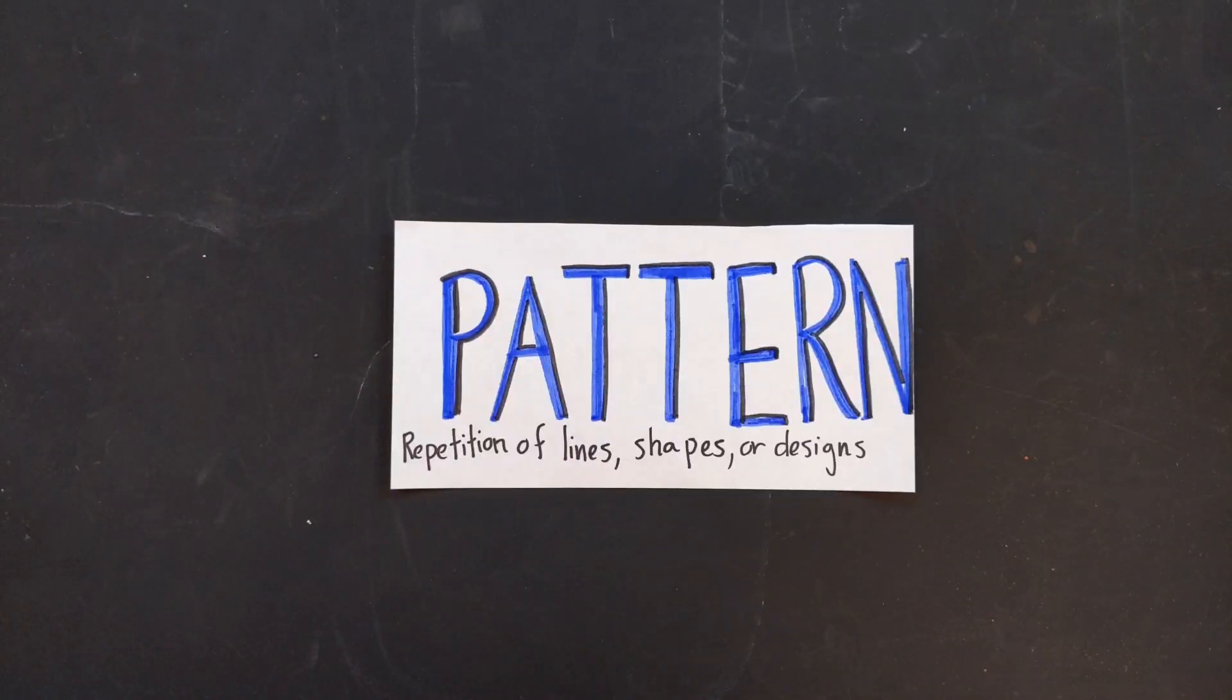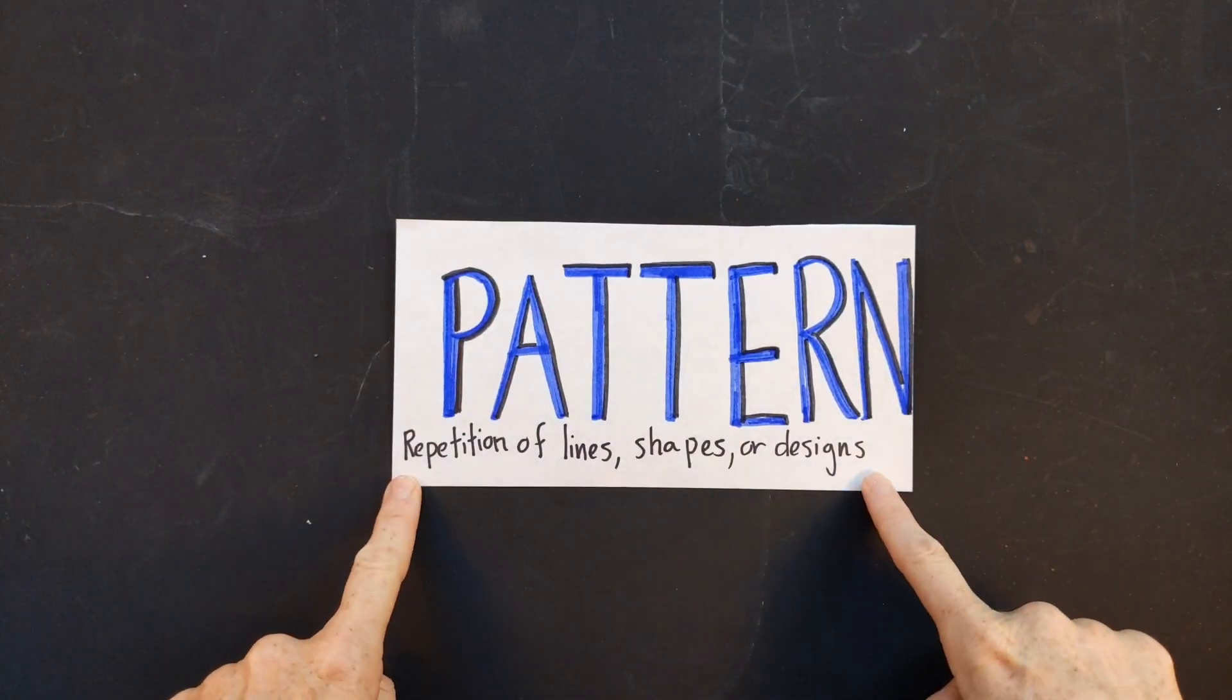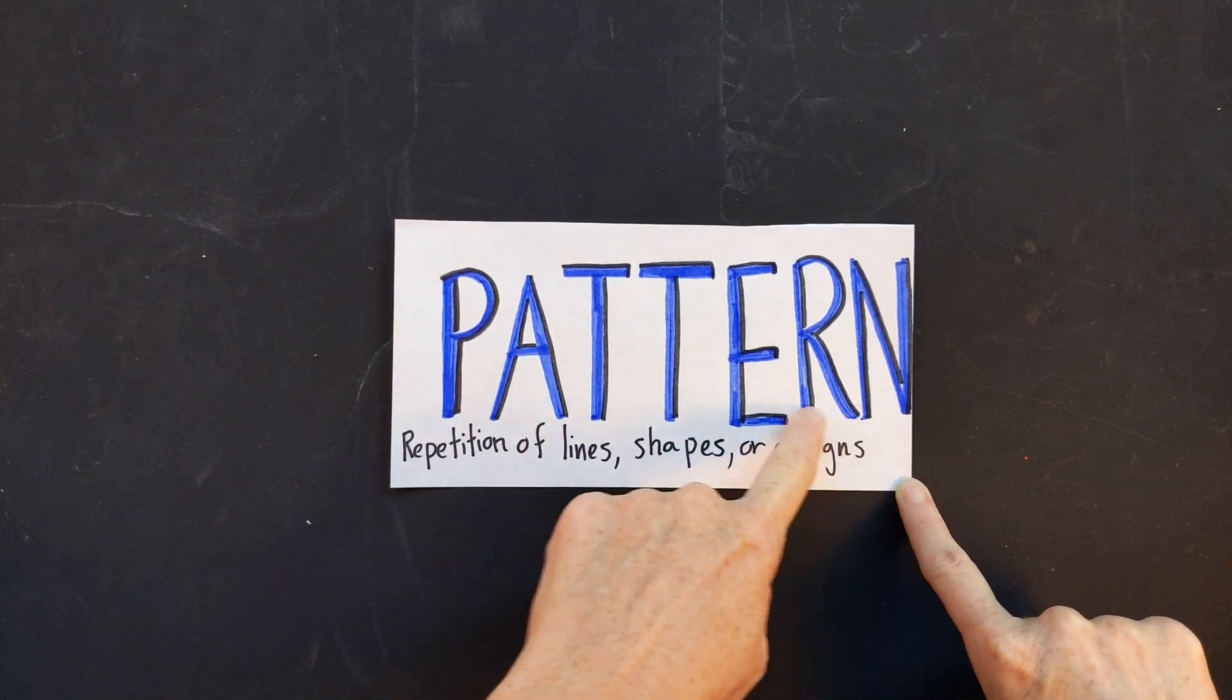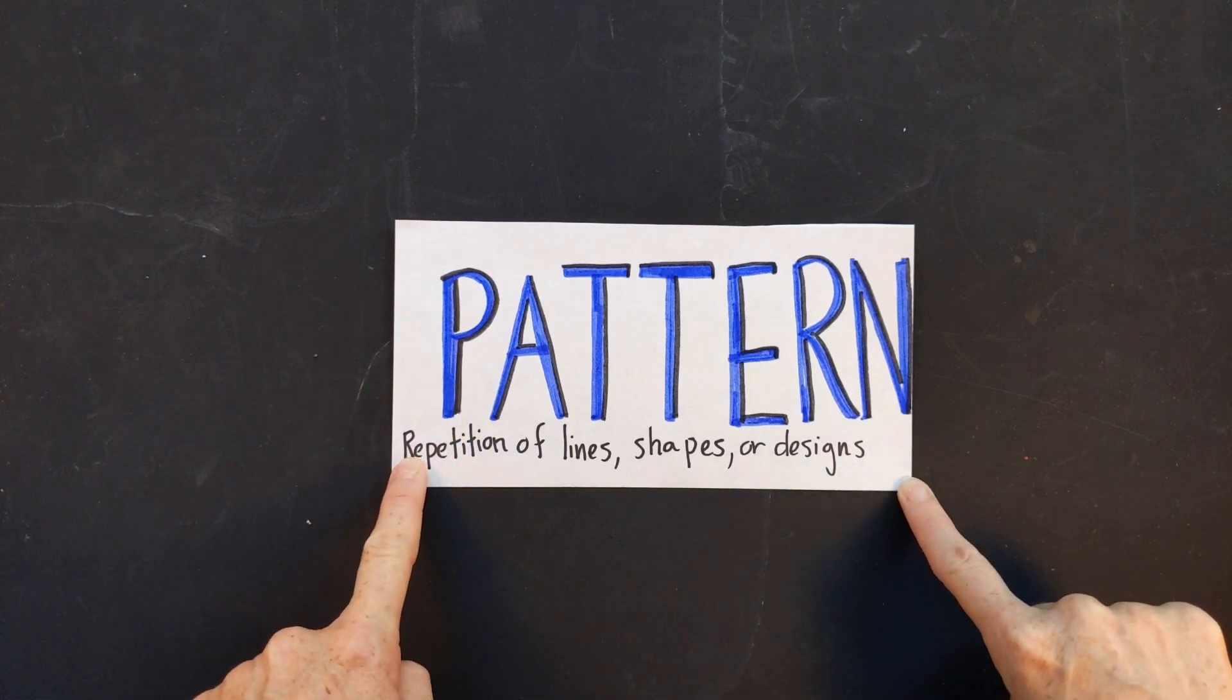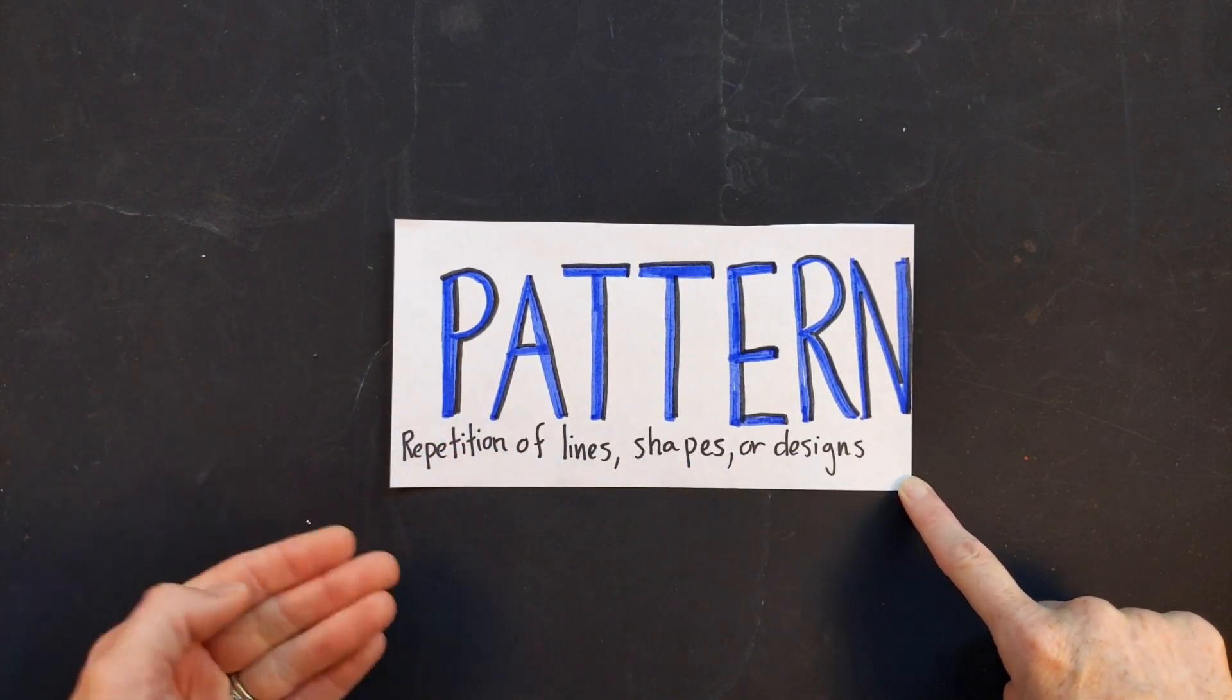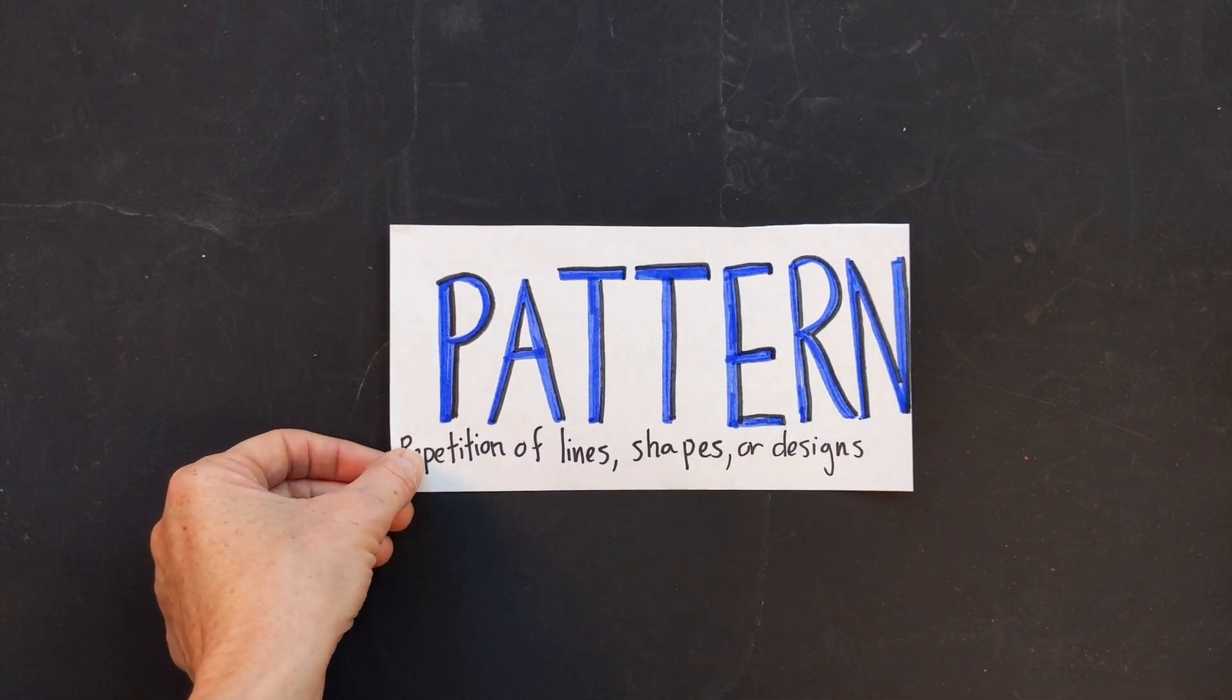Hello Twin Lakes Academy Wildcats! It's Miss Tron here. I want to talk to you a little bit about pattern today. Pattern is probably something you've heard in your math class before, but pattern is also used in art. Pattern is when we have a repetition of lines, shapes, or designs. Repetition basically means repeating. So I want to talk to you about pattern.